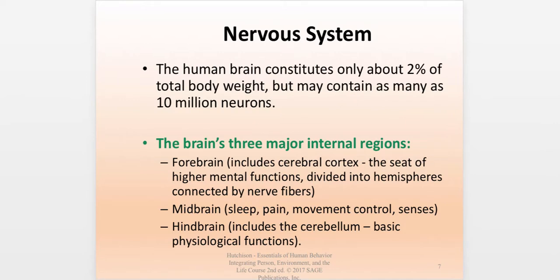The human brain is only a small part of total body weight but has as many as 10 million neurons — which is remarkable. There are three major internal regions: the forebrain, midbrain, and hindbrain. The forebrain is the largest portion and contains the cerebral cortex, where all higher mental functions occur. The cerebral cortex is divided into left and right hemispheres connected by nerve fibers. The left side of the brain controls the right side of the body, and vice versa.